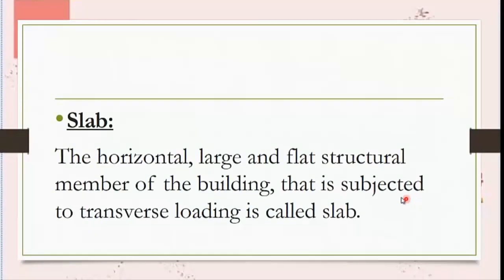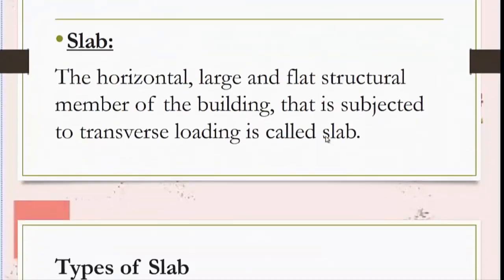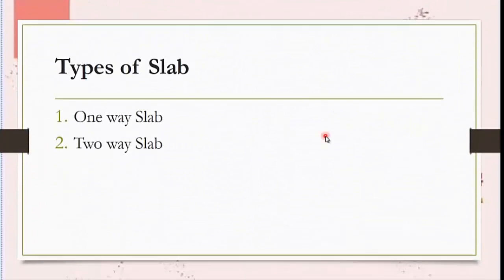Before going deep into the discussion, we will first define what a slab is. A slab is the horizontal large plate structural member of a building that is generally subjected to transverse loading. As discussed, the slab is divided into two classes: one-way slab and two-way slab.